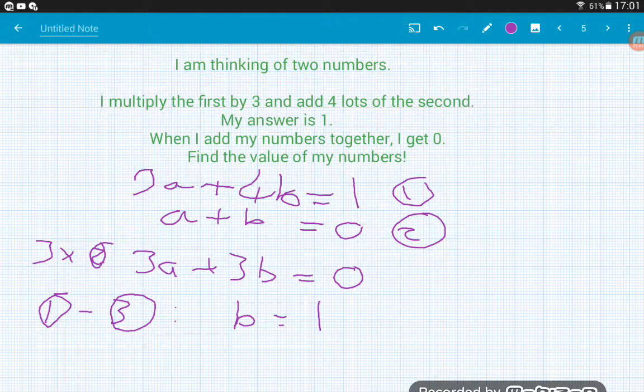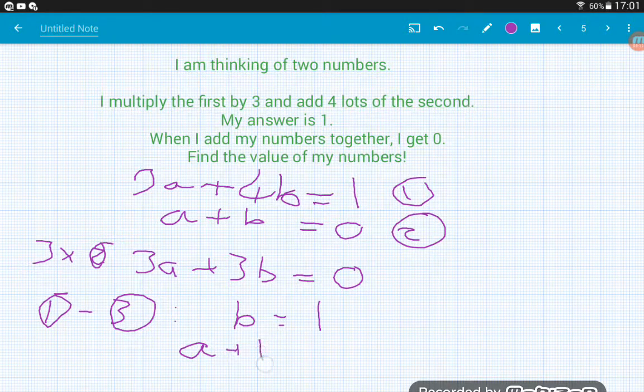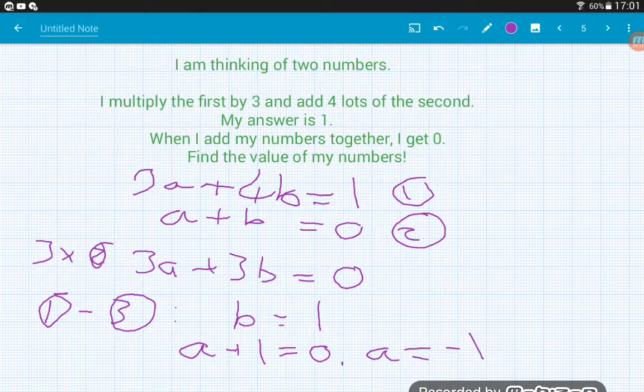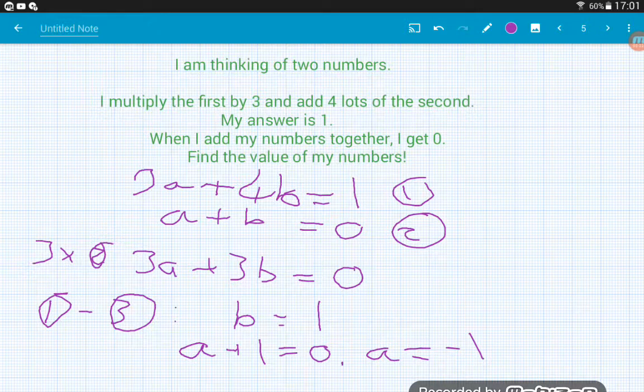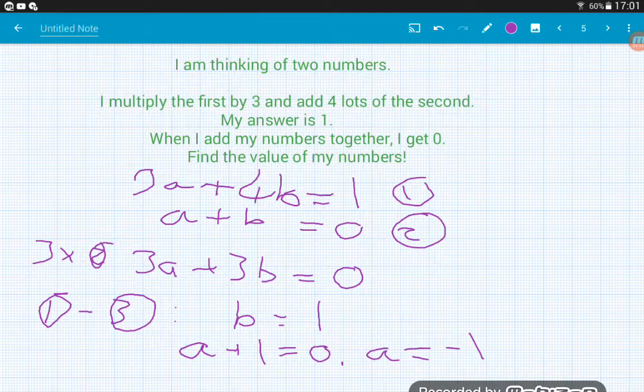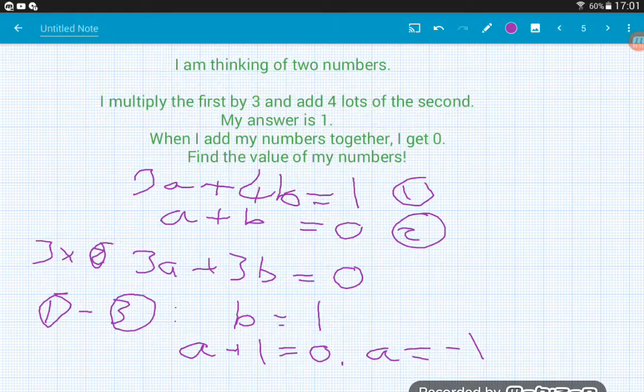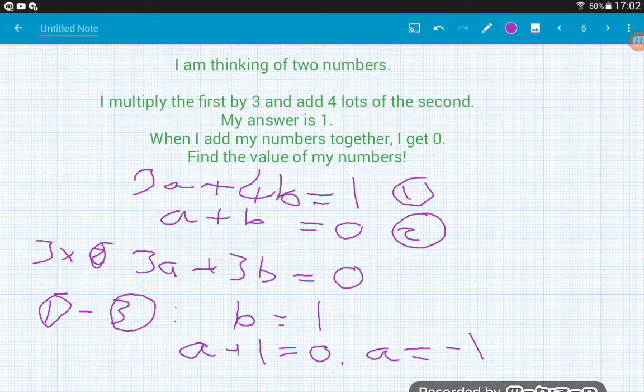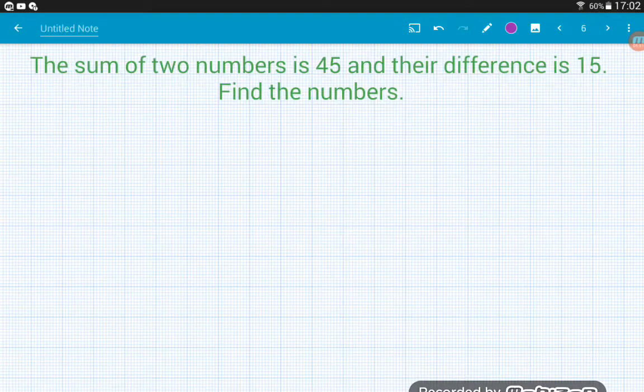Now if we substitute that back into the second equation, we would get A plus one equals zero. Therefore A equals minus one. There's my two parts of the solution. A is minus one and B is one. Jobs are good. And you can always check these by putting the numbers back in. So if we try this, if we multiply my first number by three, we'd get minus three. Add four lots of the second. Four times one is four. Minus three add four is one. And if I add them together, minus one add one is indeed zero.